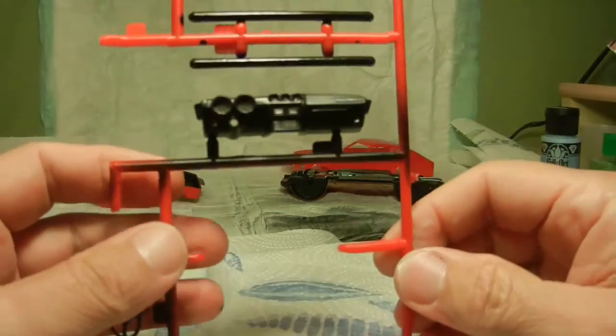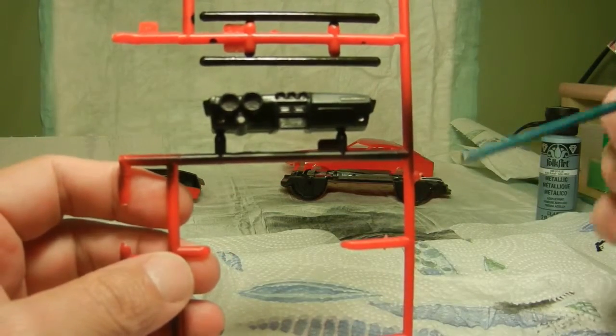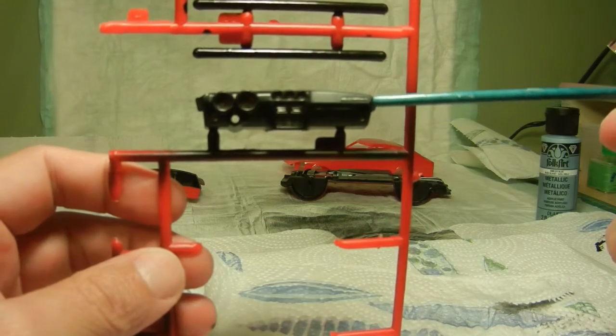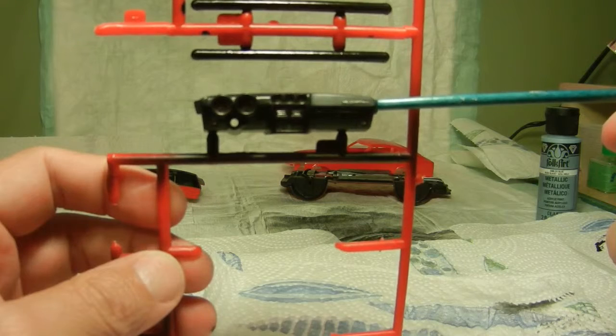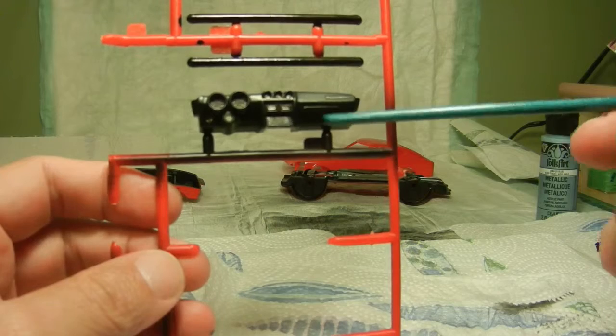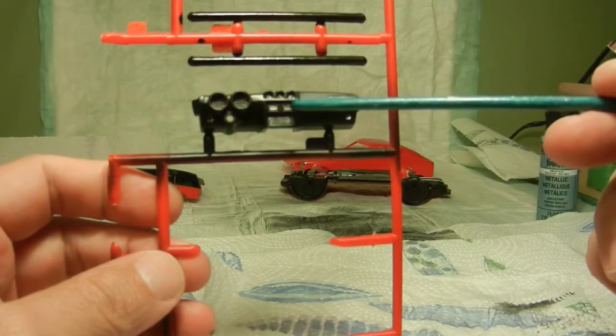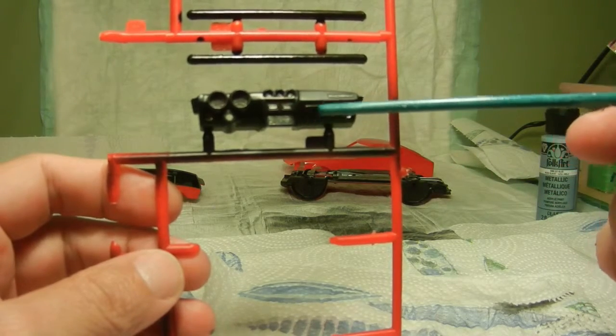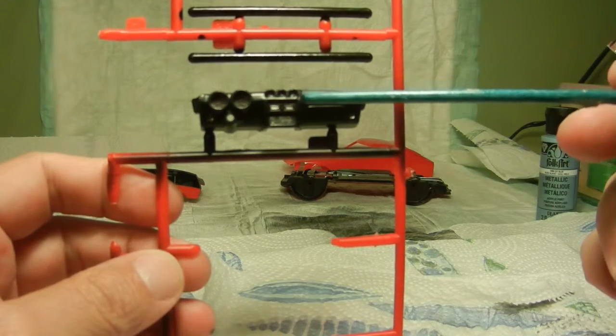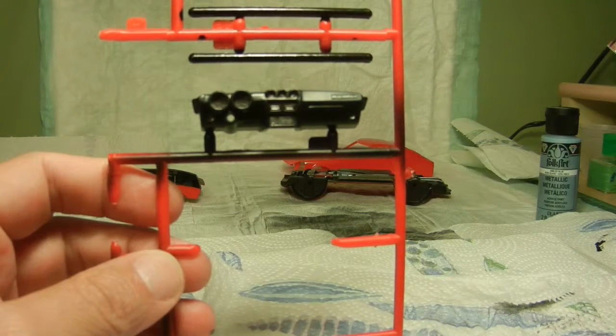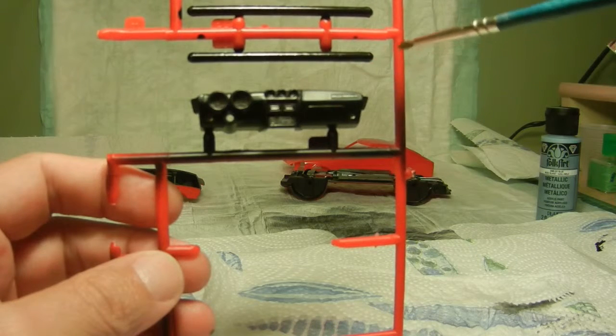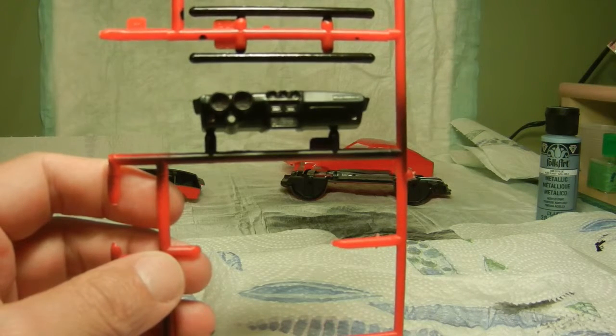As you can see I've done a little bit more on the dashboard. Same thing, I used the FolkArt metallic silver to dry brush the insignia of the Datsun above the glove box as well as the AC vents on the undersides and in the center. As far as the gauges and the clocks, I went ahead and basically just took my fine brush and dabbed a little bit of silver sterling in there.